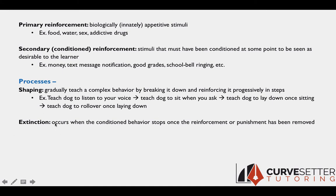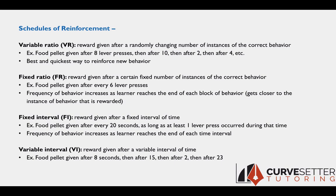Extinction in operant conditioning occurs when the conditioned behavior stops — usually when the reinforcement or punishment has been removed from the situation and some time has passed. When behavior is being reinforced, the correct behavior could be reinforced after every instance or intermittently. If intermittent, there are four different schedules of reinforcement. The schedules are either a ratio schedule — rewarded after a certain number of instances — or an interval schedule — rewarded after a certain amount of time.